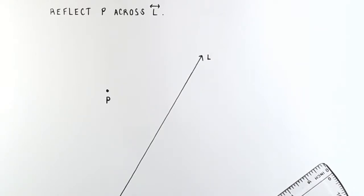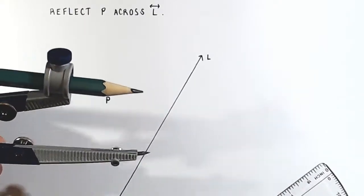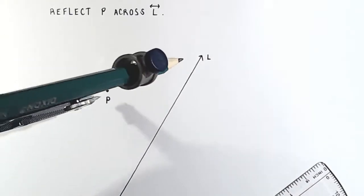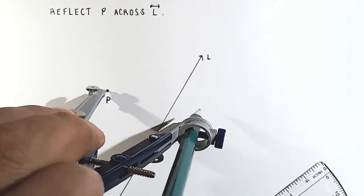So in this example, we're asked to reflect point P across line L. And what we need to do is take our compass and increase the radius of the compass such that we are going past line L.